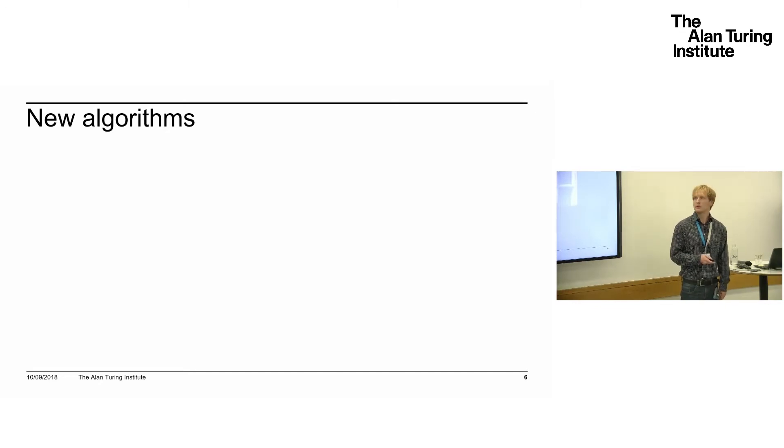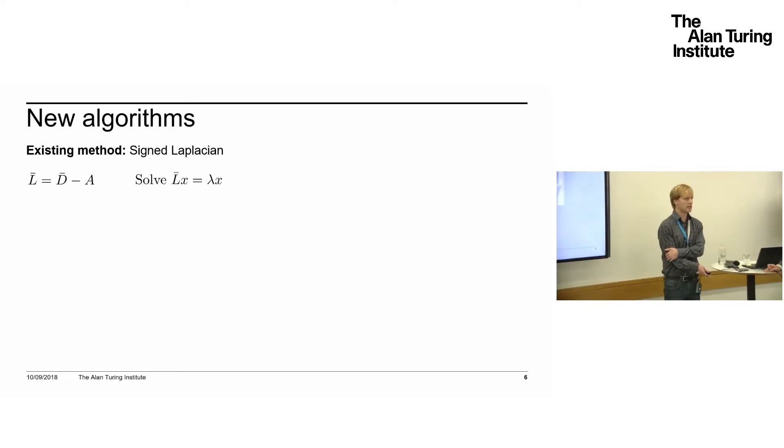I'll start with an existing method, the signed Laplacian, then describe what we can do differently to improve performance where it fails. It's a spectral method, and the matrix we take is this L-bar, which is just—A is the adjacency matrix—and D-bar is the degree matrix if you ignore the signs of the edges. You add up the absolute value of edge weights for each node, put that in a diagonal matrix, that's D-bar. That equation is what you solve to find the eigenvalues, and from there you do the same stuff.